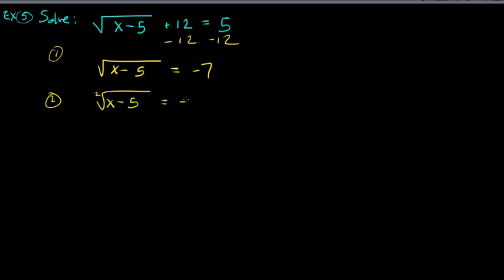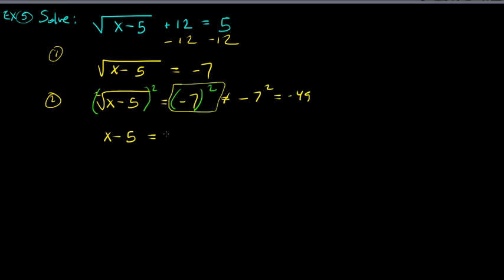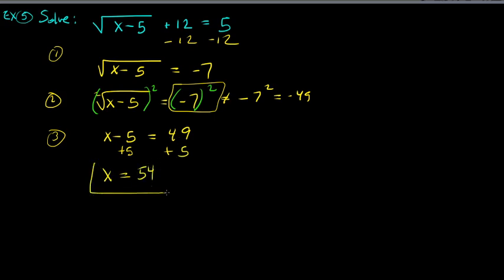Step two: square both sides to cancel the square root. On the left you get x minus 5. On the right, be careful — this is negative 7 times negative 7, a negative times a negative, which is positive 49. Add 5 to both sides: x equals 54.